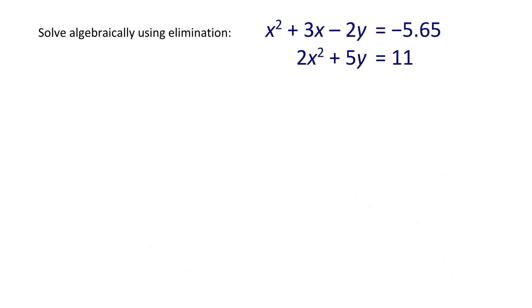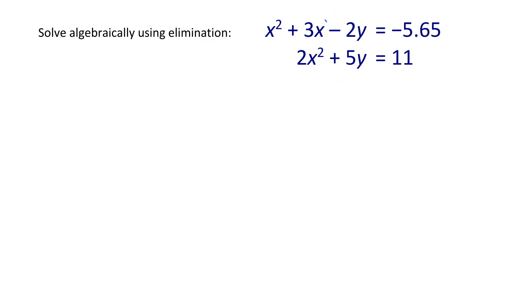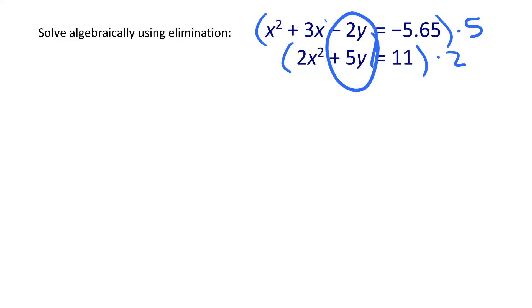When looking at quadratic-quadratic systems, you'll often have both x² and x terms, making it difficult to eliminate those. It's always easier here to eliminate the y value. These two y terms don't match up as is, so I need to multiply: I'll multiply the first equation by 5 and the second by 2, making both y terms −10y and +10y.